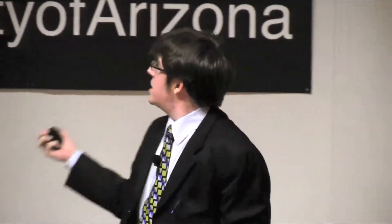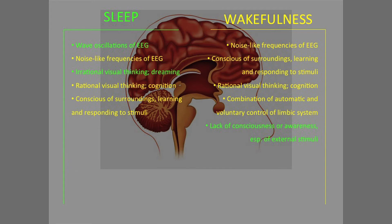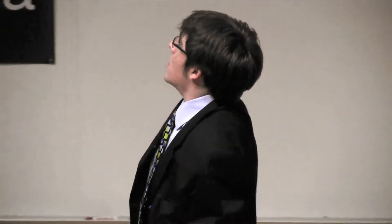Through all these various ways that we look at sleep, we're able to rule out some of those aspects. There are qualities we attribute to wakefulness that are actually indicative of sleep. Things like EEGs — the ways our brain shows electrical activity — can sometimes be noise-like. Our brain during REM sleep looks exactly the same as it does during wakefulness. If you just looked at someone's EEG, you would have no clue whether they were dreaming or awake. Rational visual thinking and cognition — we dream. Lucid dreaming: you're almost in control of your reality, and some people have trained themselves to do it.